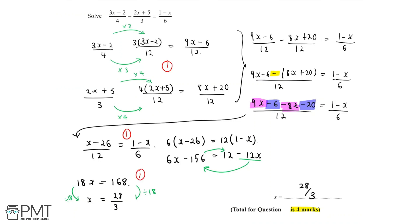And that fourth and final mark is for getting the correct answer of 28 over 3, which could also be written as a mixed number, 9 and a third. And so this correct answer will get us the fourth and final mark in order to get full marks in this question.